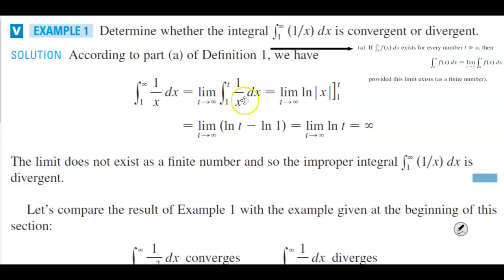Now if we take the antiderivative of that integral, we end up getting the limit as t approaches infinity of the natural log of the absolute value of x from a lower limit of 1 to an upper limit of t.